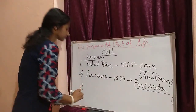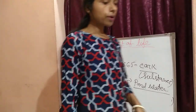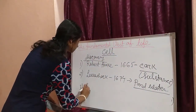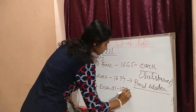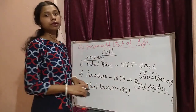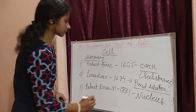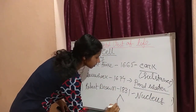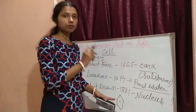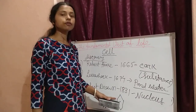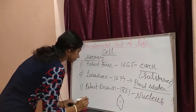Next came Robert Brown in the year 1831. Robert Brown came with the idea of the nucleus in the cell. The nucleus is present in the middle of the cell — the brain of the cell, the center of the cell, which gives all the information. It is the main part of the cell.